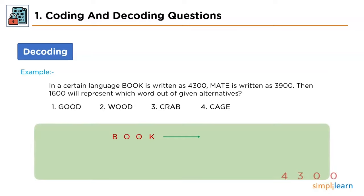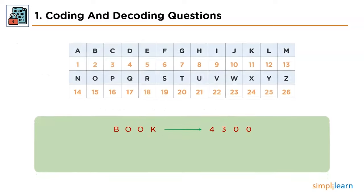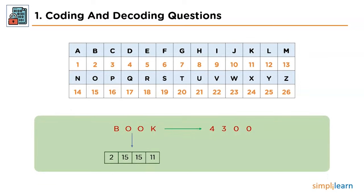First, we'll look at the encryption of the word 'book'. The word 'book' has been converted into numerical format, so there must be some relation between alphabetical numbering and the number 4300. The characters B, O, O and K have position values 2, 15, 15 and 11. If you sum all these values, you'll get number 43. The two trailing zeros appear to be a constant addition.